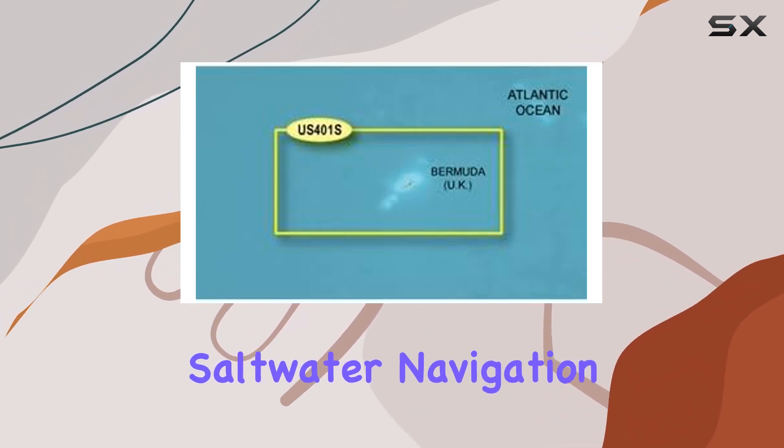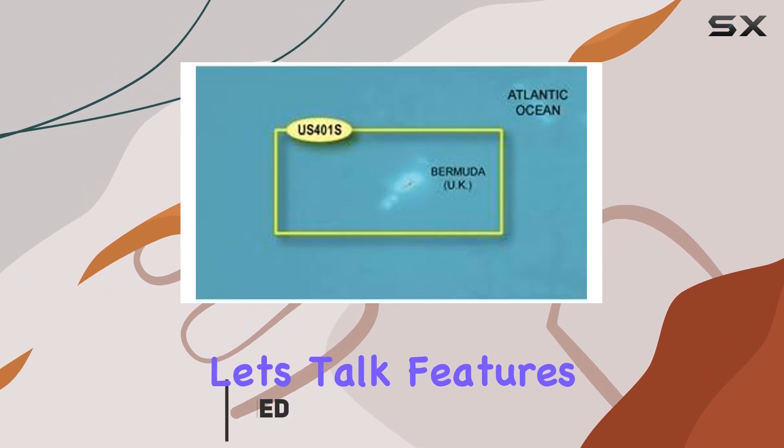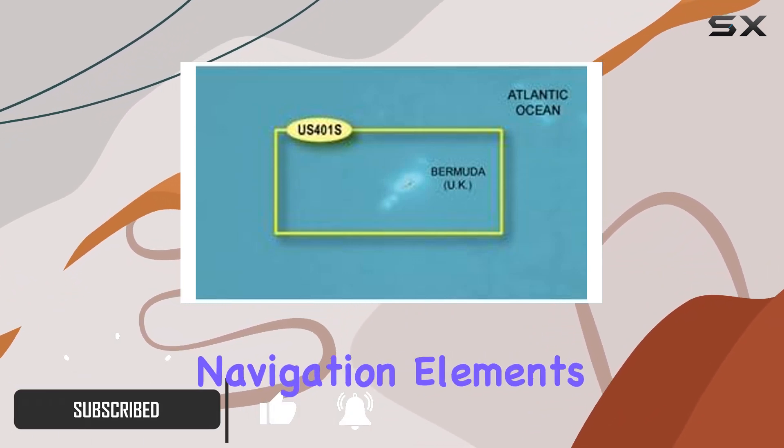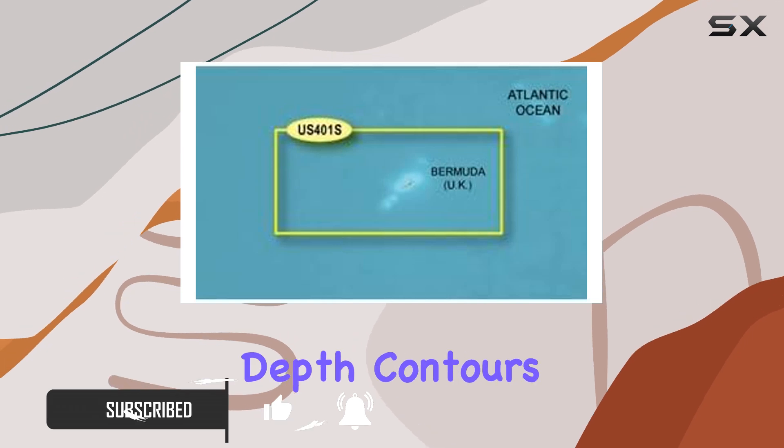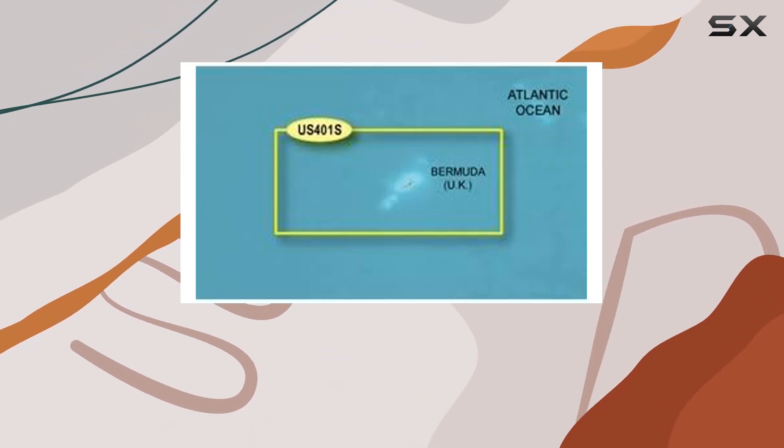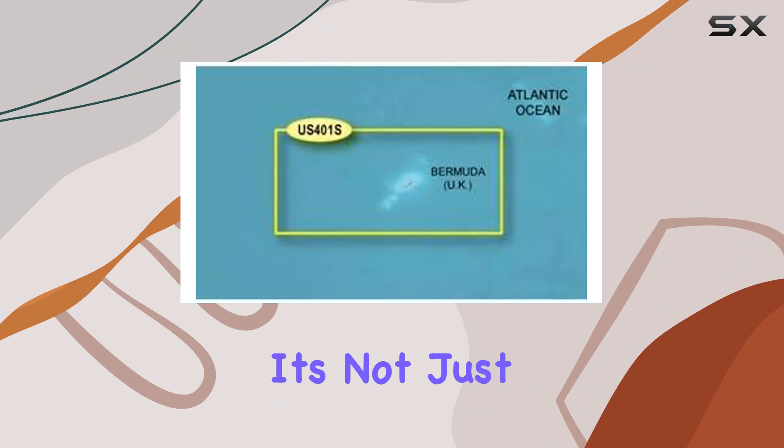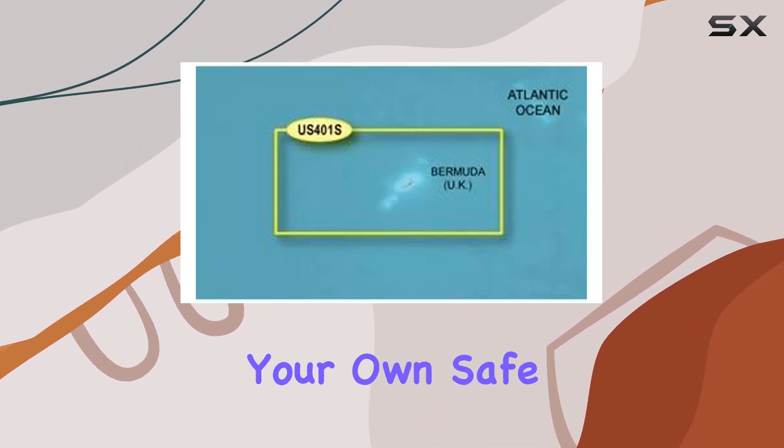Let's talk features. This little card packs a punch with realistic navigation elements from shaded depth contours to coastlines and navaids. And guess what? It's not just about aesthetics. Safety shading lets you set your own safe depths, ensuring smooth sailing every time.